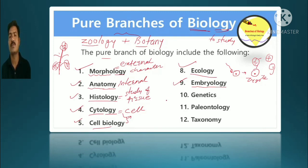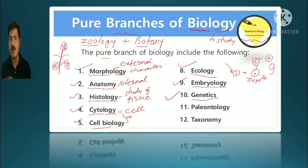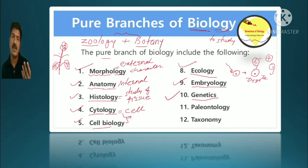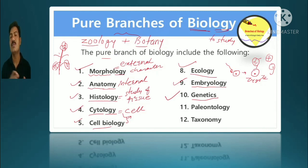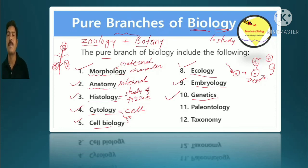The next very important branch is genetics — Aanvanshashastra in Marathi — the study of hereditary characters, how they pass from one generation to another, from parents to offspring. That is why a dog's puppy is always a dog and not a cat, because genes carry the similarity to parents, with 50-50% of characters from each parent.